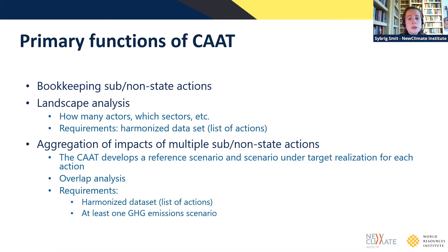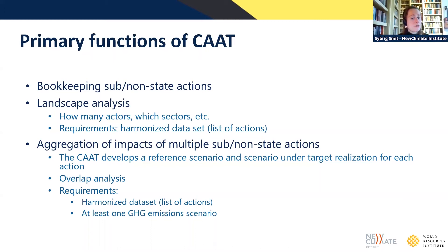The climate action aggregation tool holds several primary functions. First, it can be used to bookkeep sub- and non-state actions in a country or region, keeping a list of what's happening in terms of sub- and non-state action. The second primary function is a landscape analysis, used to identify how many actors, in which sectors, et cetera, are operating — users need a harmonized data set for this. The third primary function is the aggregation of potential impacts of multiple sub- and non-state actions, where the tool develops a reference scenario and a scenario under target realization for each action, and performs an overlap analysis.